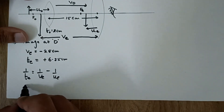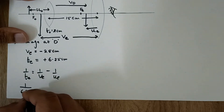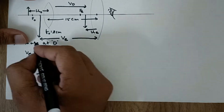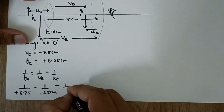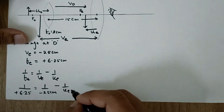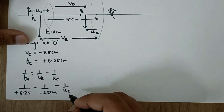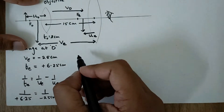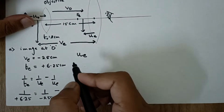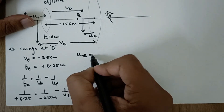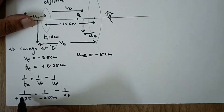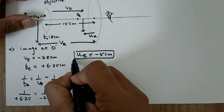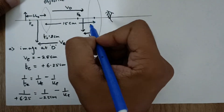Applying the lens formula and placing all the values, using sign conventions: since this is a converging lens with positive focal length, v_e is negative minus 25, and we need to find u_e. Note that the unknown quantity does not get a sign convention pre-assigned. Transferring terms and solving, we get the value of u_e as minus 5 centimeters.